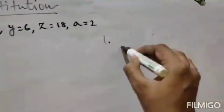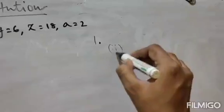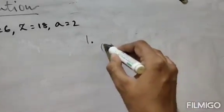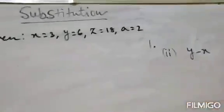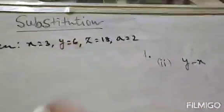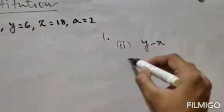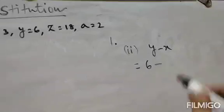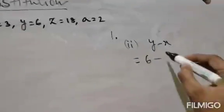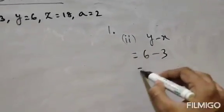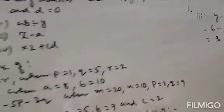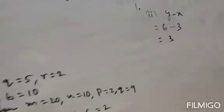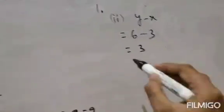First sub-question is y minus x. The value of y is 6, so 6 minus the value of x which is 3, gives us 6 minus 3 equals 3. Just put the values in.